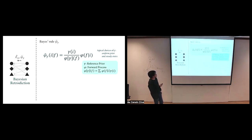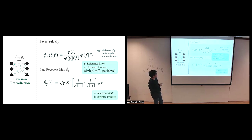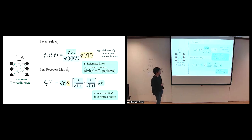Typical choices for the reference prior include the uniform prior and the steady state - for bi-stochastic maps, these are exactly the same thing. For thermodynamic scenarios like thermal operations, what's really being assumed is the steady state, which makes sense because the process may have been going on for a long time. The PETS recovery map is the quantum analog of Bayes' rule: instead of a reference prior distribution, we have a reference quantum state, and E is the forward CPTP map. Looking at the structure, you'll notice similarities with regard to the posterior and prior acting in different ways.